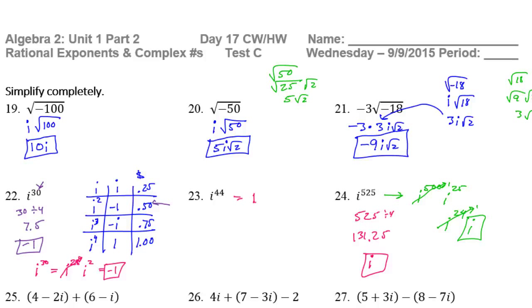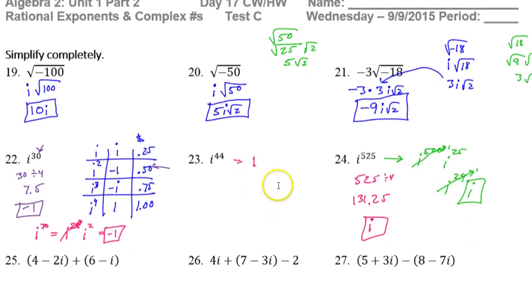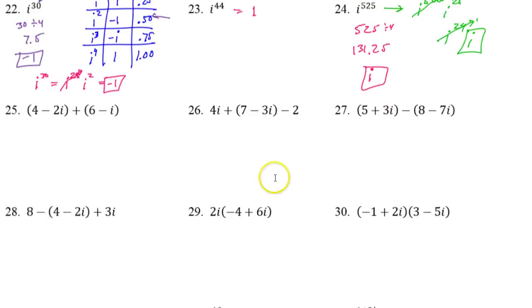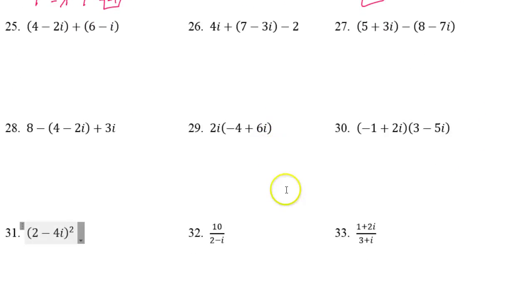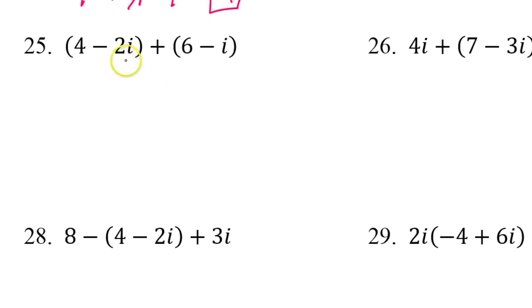Alright, so in this video we're continuing our review and we're going to be working with complex numbers now, picking up here with number 25. Now when we had the quiz, a lot of you guys made the mistake of doing some sort of a distributive property. So I'm hoping that I've gotten the message through to you. We are not going to multiply 4 times 6 and get some kind of 24.